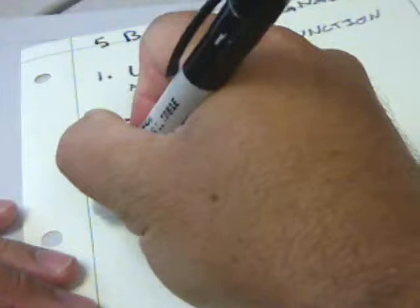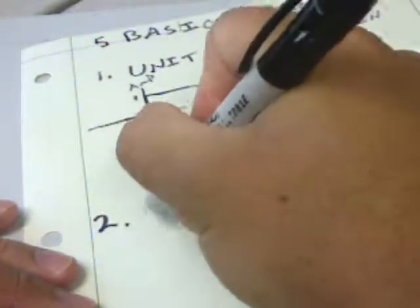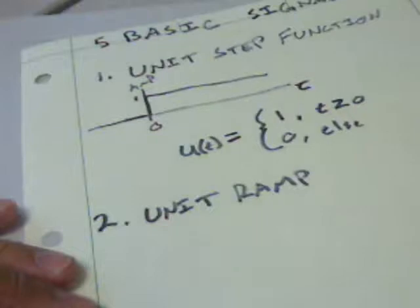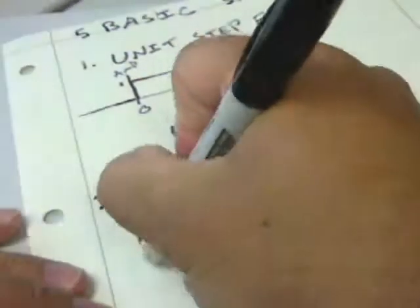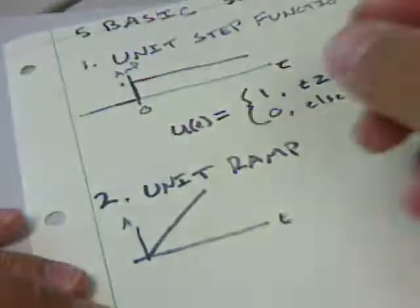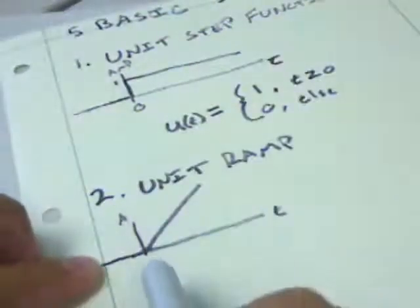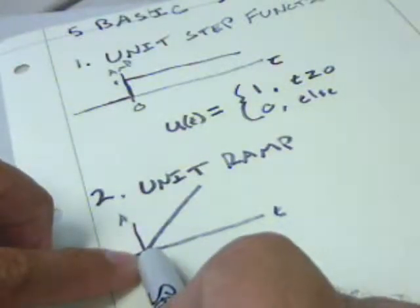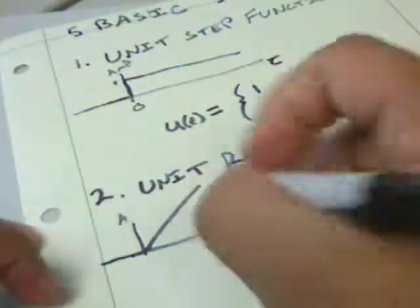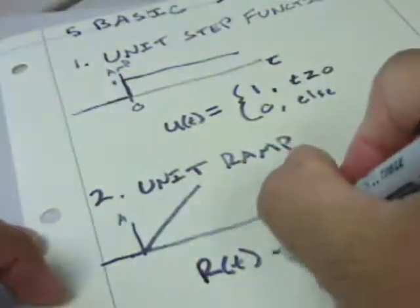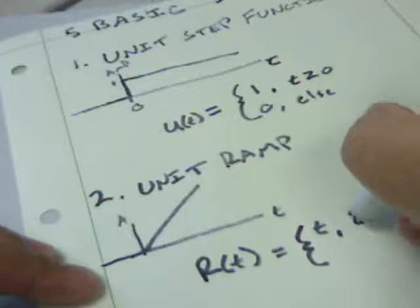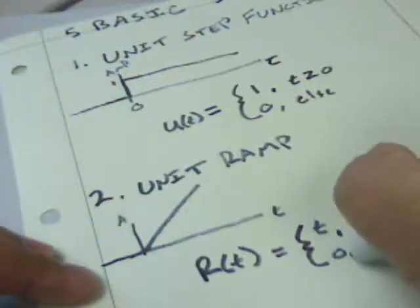The second one is very similar to that, and we'll call it the unit ramp function or just the ramp function. With amplitude and time, it is zero for all time that's less than zero, and then at t equals zero, the function is equal to—the amplitude is equal to the time. We can say that r(t), the ramp function, is equal to t for all time greater than or equal to zero, and it's zero otherwise.